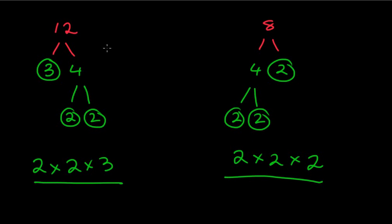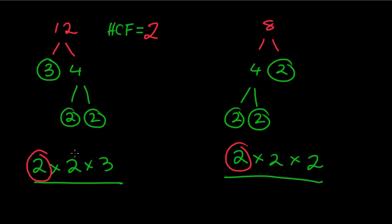When looking for the highest common factor, I look for all numbers that are common — what numbers on the left-hand side also occur on the right-hand side. We've got a 2 and a 2 — both common. We've got another 2 and another 2 — also common, so times 2. That 2 × 2 occurs in both. Now we have a 3 and a 2 left over — they're not the same, so we stop. The highest common factor equals 4, which matches what we found before.